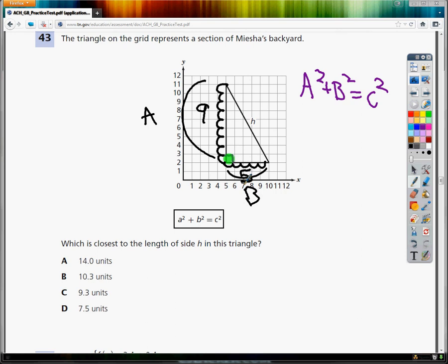So you do 11 minus 2 and it would give you 9 and I'm just going to put 9 squared. And you could do 10 minus 5 which will give you 5. All I'm doing is plugging in 9 and 5 for A and B.